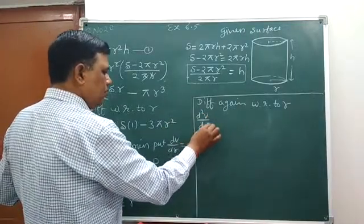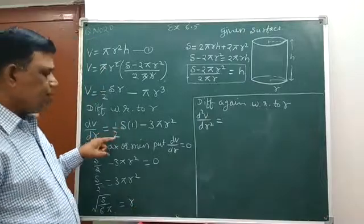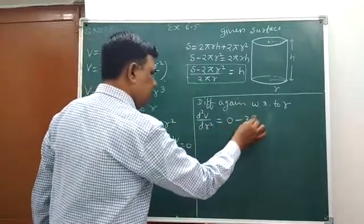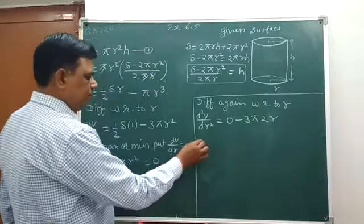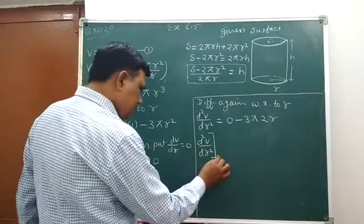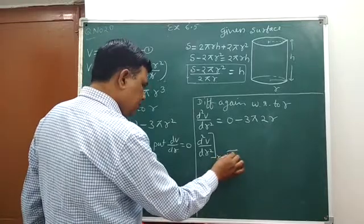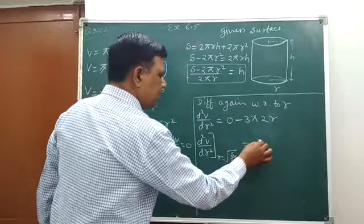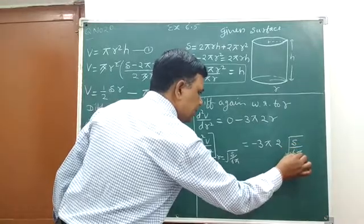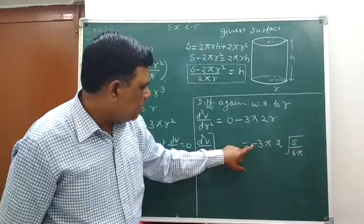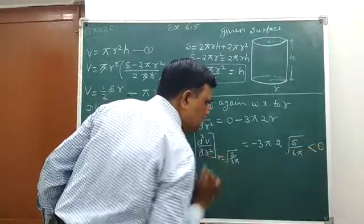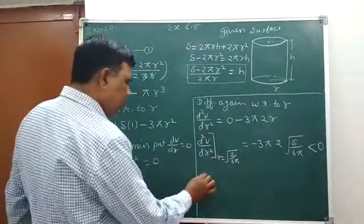d²V/dr² equals, S upon 2 is constant so its derivative is 0, and here is minus 3π and 2r. d²V/dr² at the point r equals square root of S upon 6π equals minus 3π into 2 times S upon 6π. These all values are positive but by this minus we will get always negative, so it will always be less than 0.